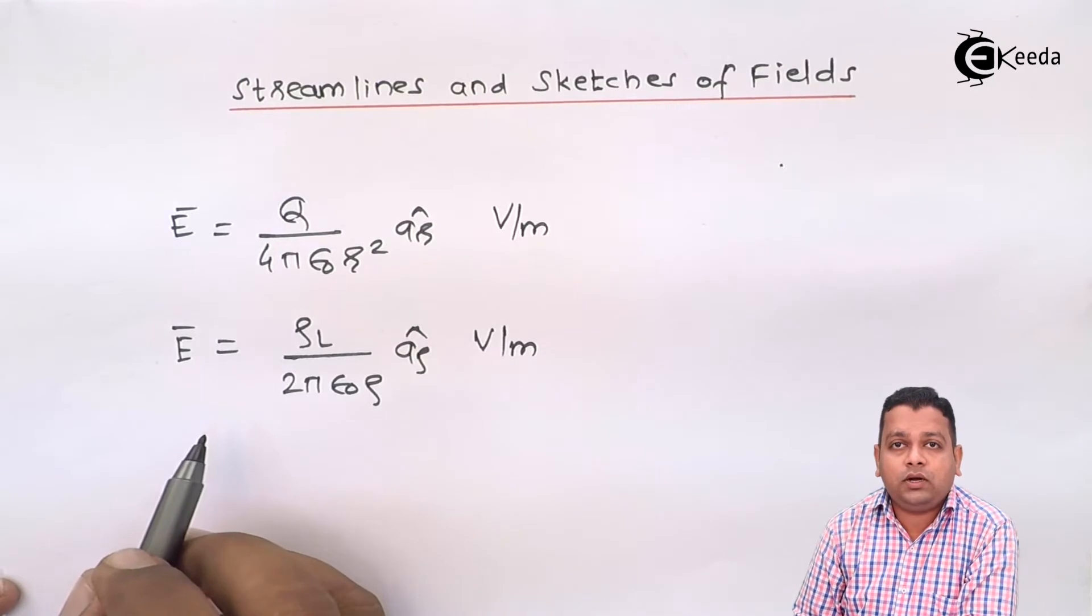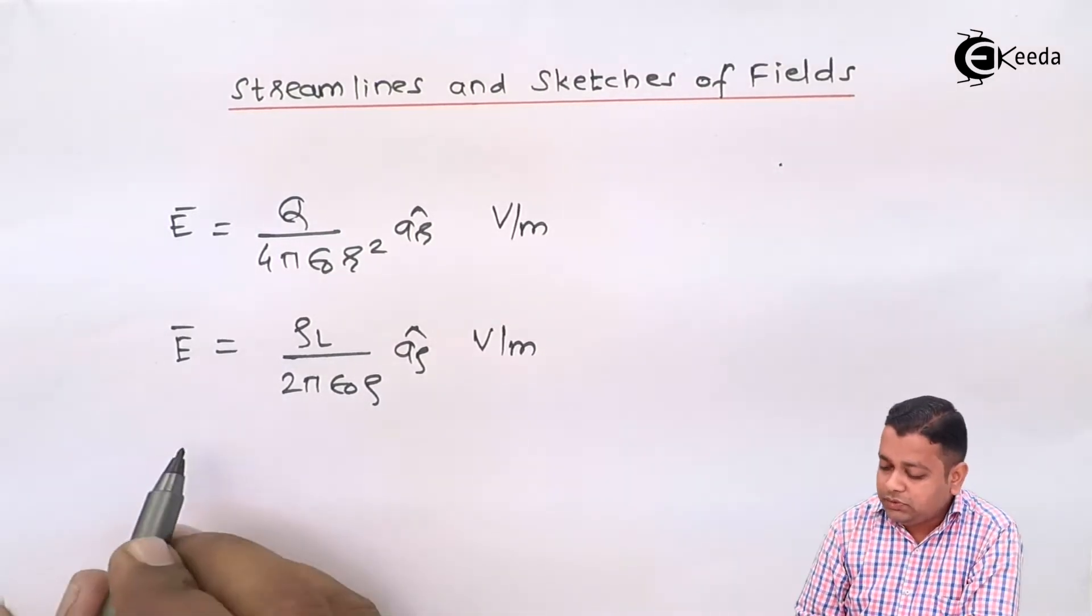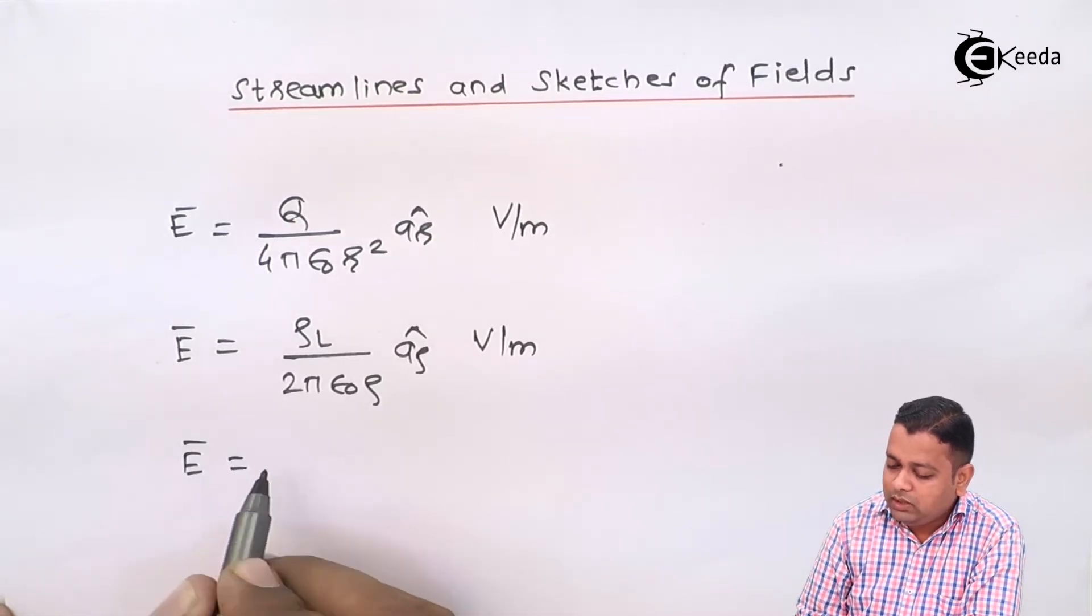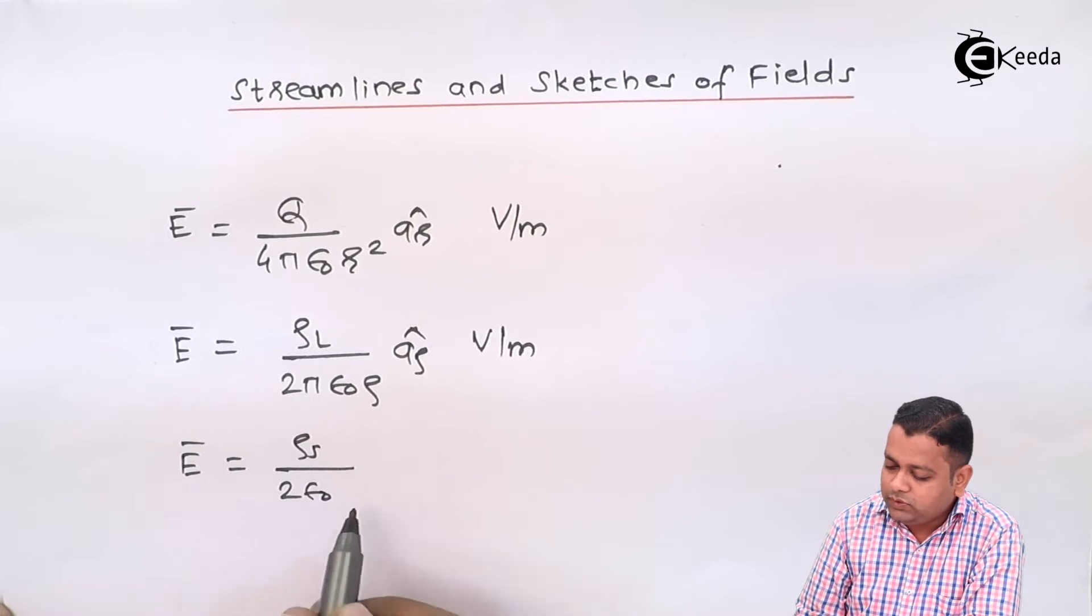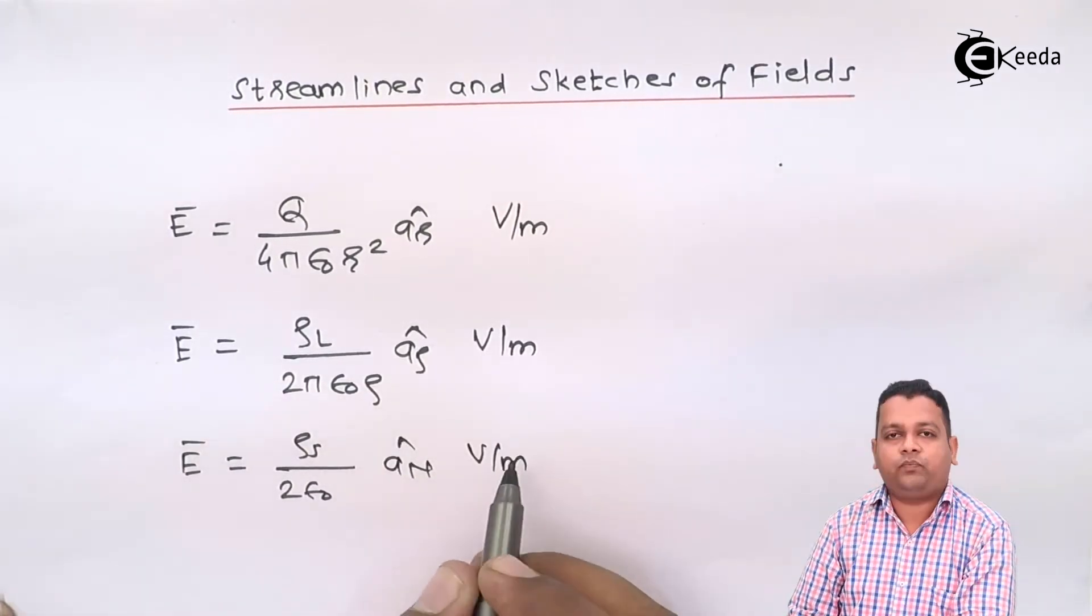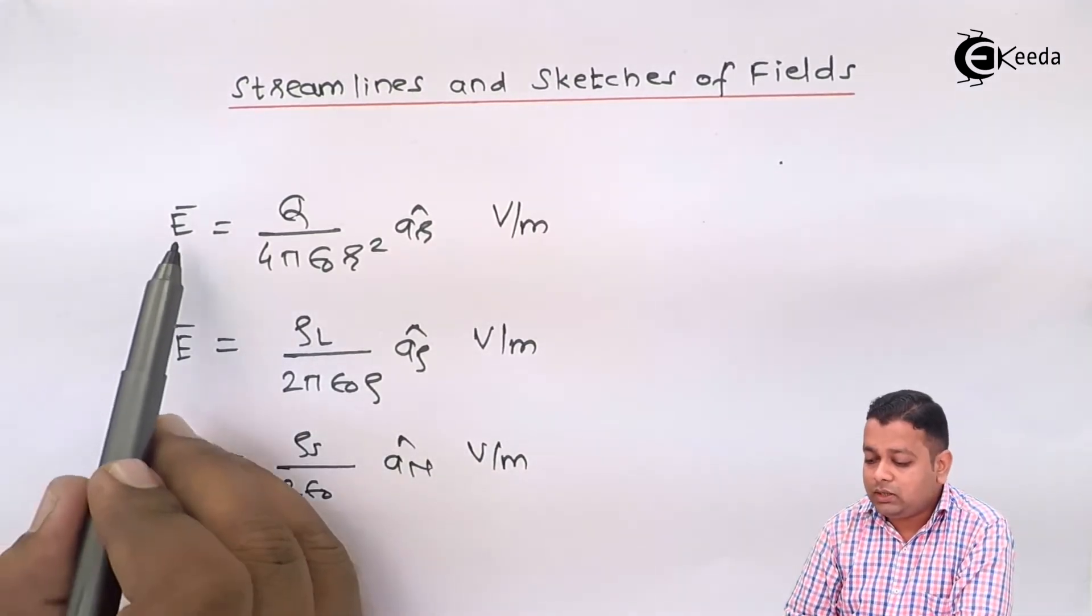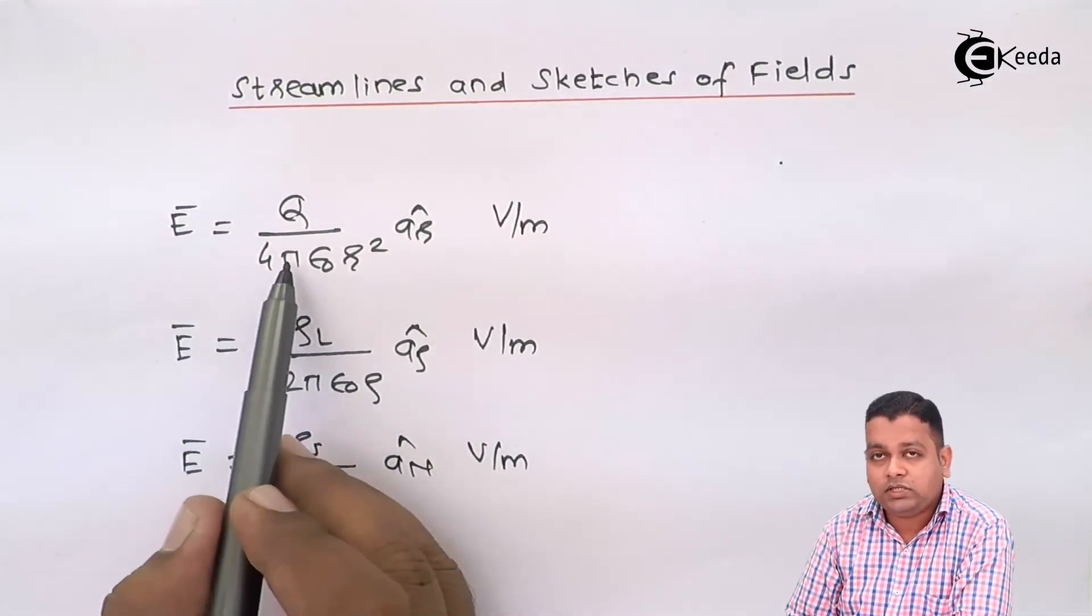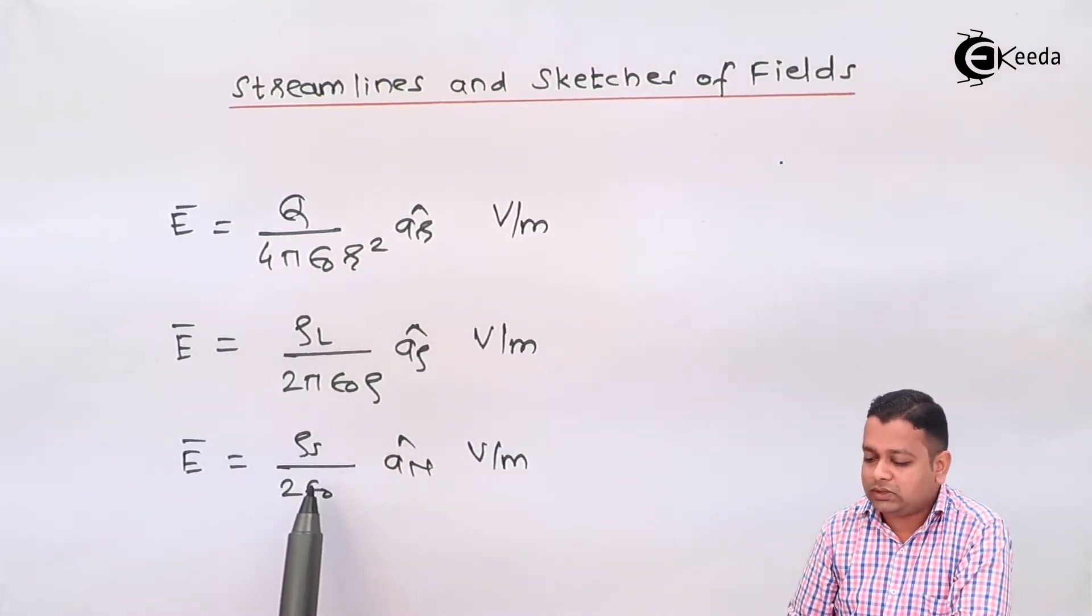And if the electric field intensity is because of uniform infinite sheet of charge, that time we write E1 is equal to rho S upon 2 epsilon 0 an cap volts per meter. Now we have taken three types of formulae giving electric field intensity due to point charge, uniform infinite line charge and uniform infinite surface charge.